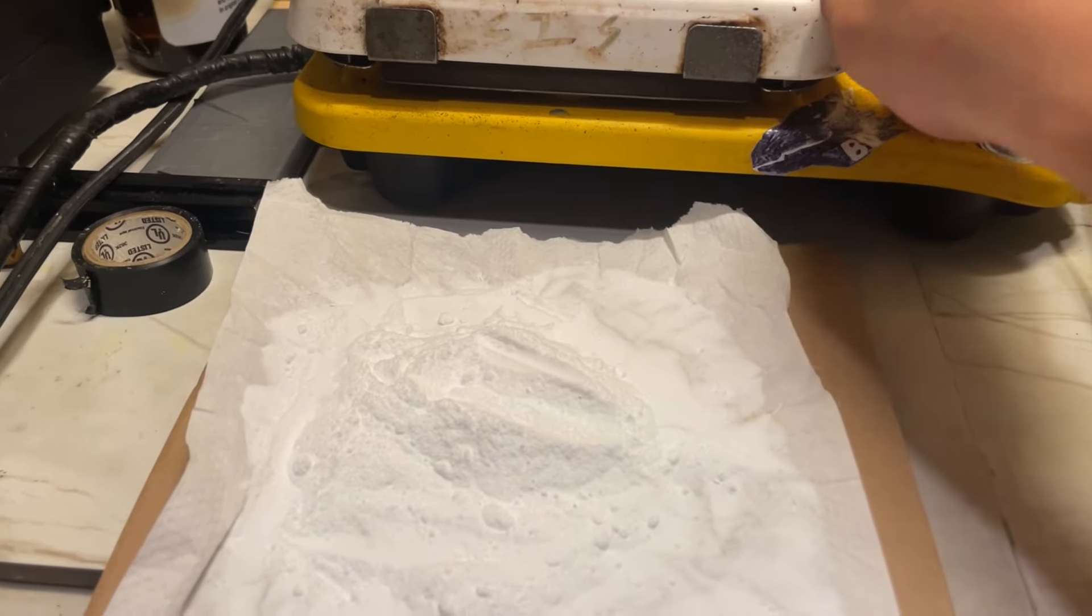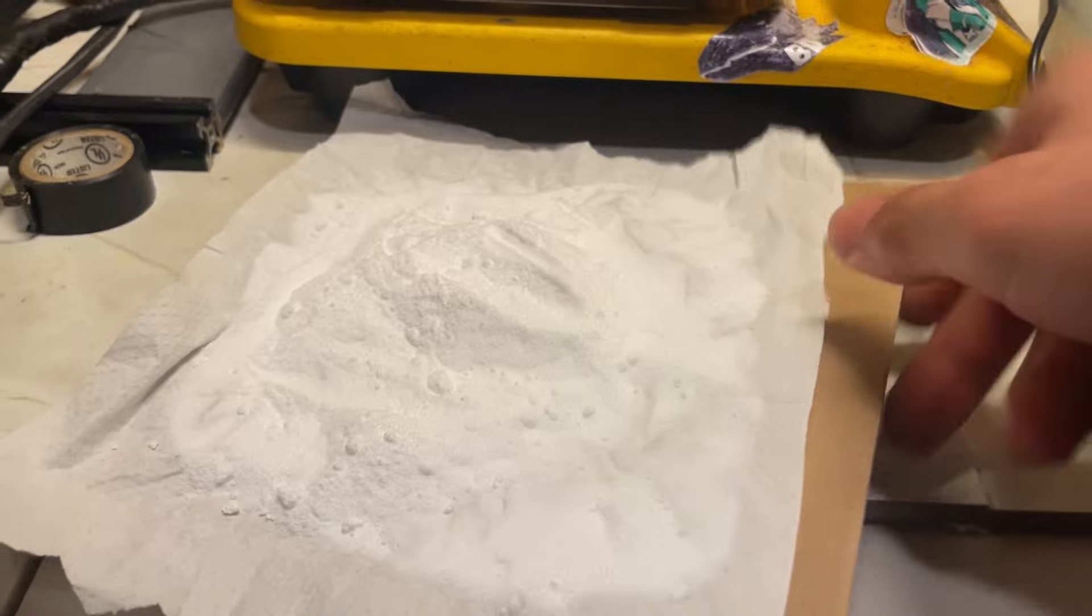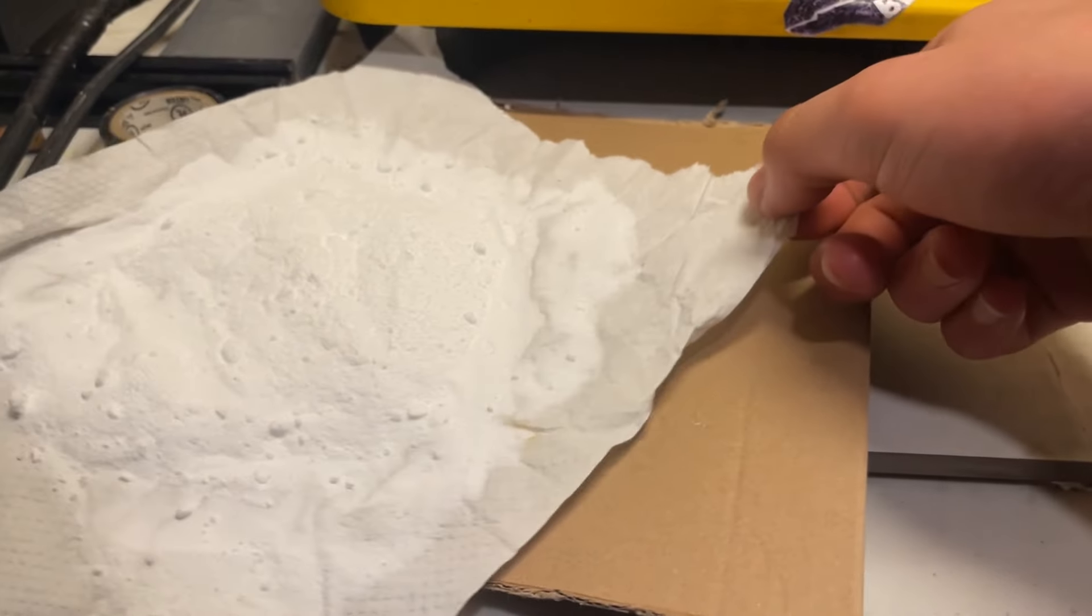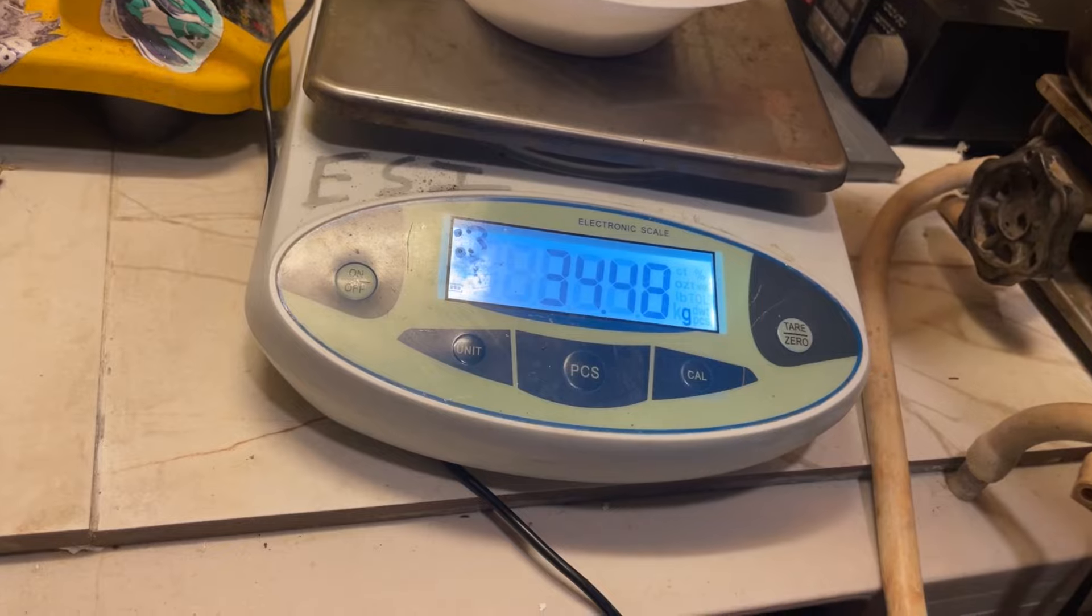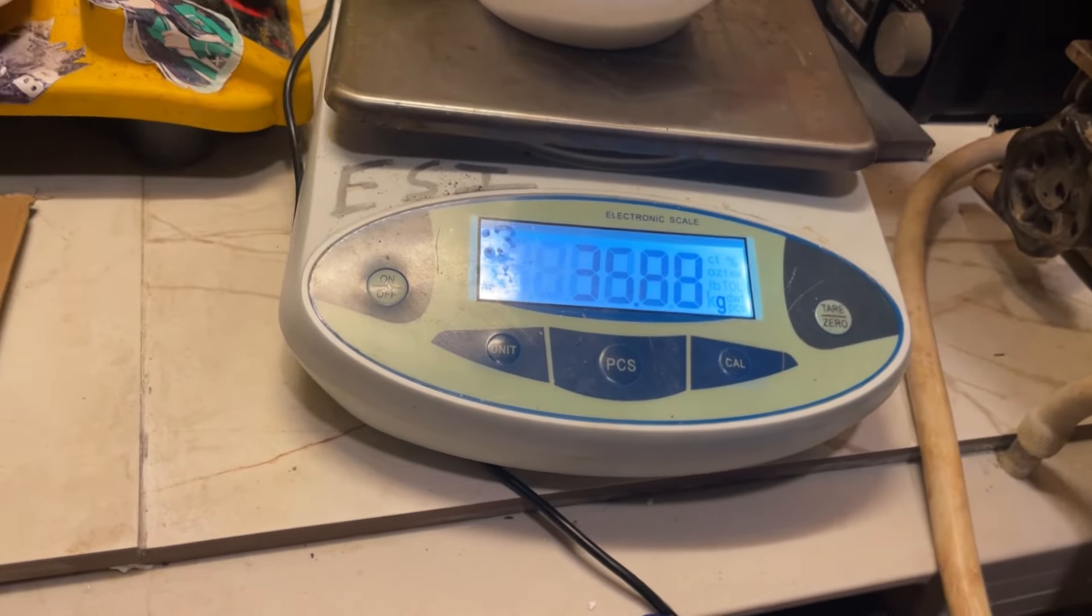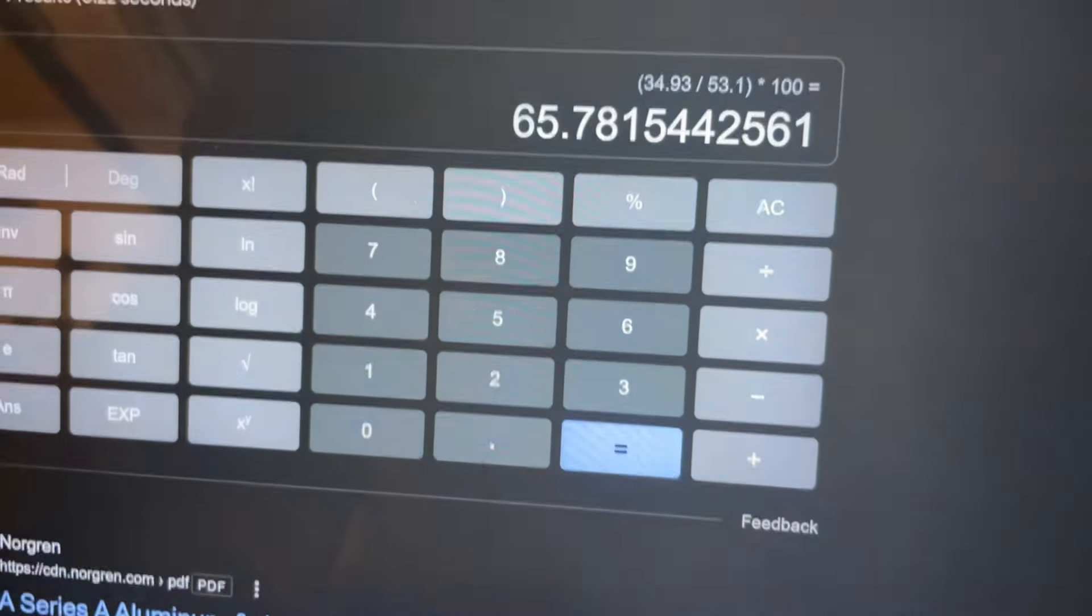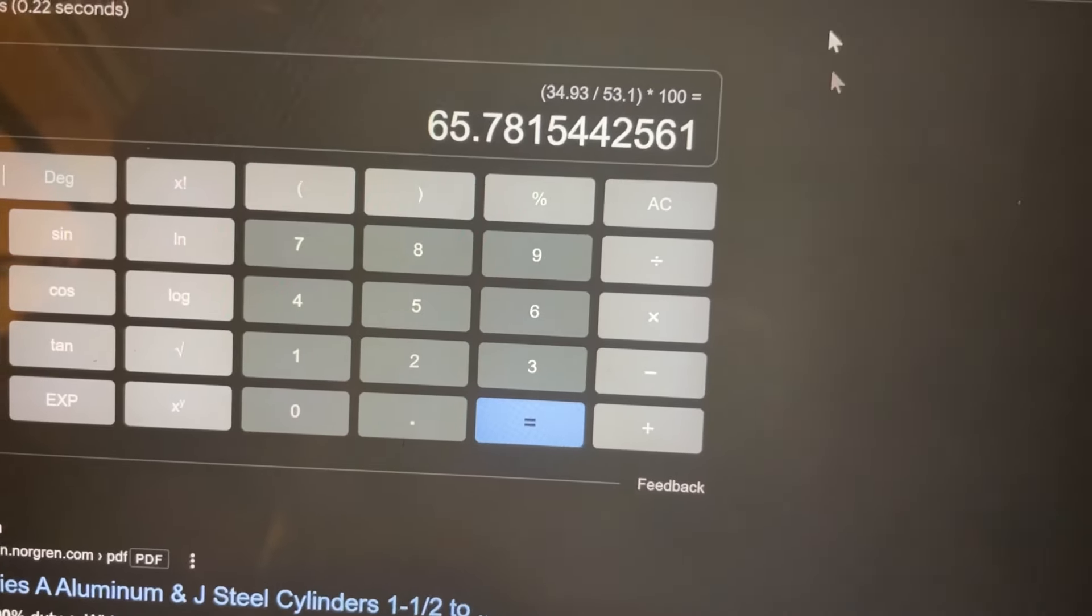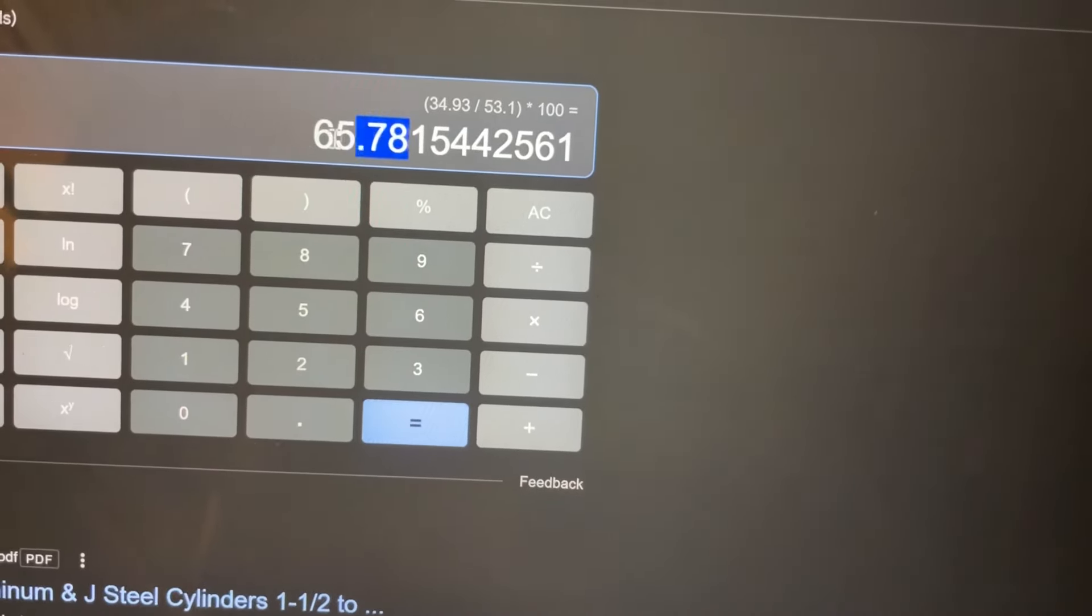Let's see how much we got from this. Oh, how am I gonna pick this up? Don't wanna do that. We have 34.93 grams. We should've gotten 53.1 grams, assuming 0.9 mole urea, which is what it should be. So you have 66% yield.